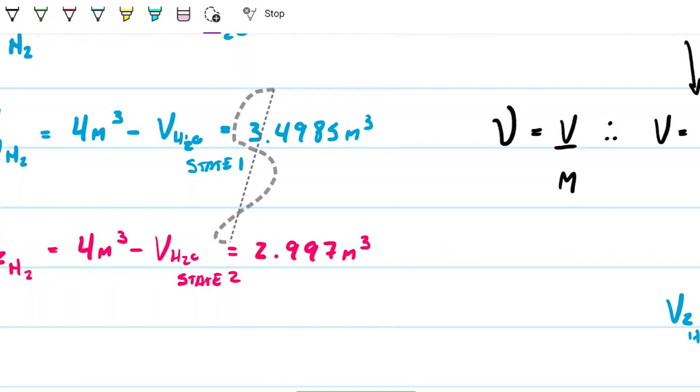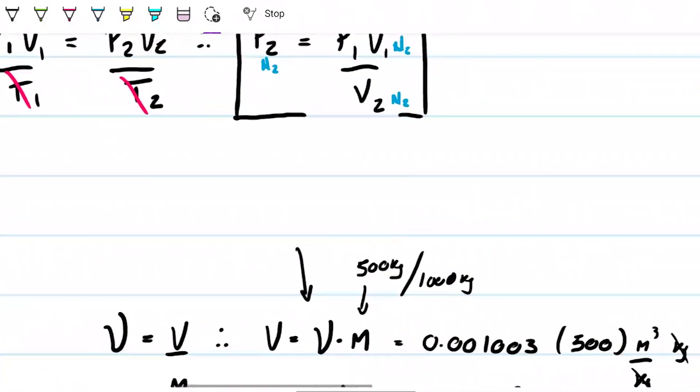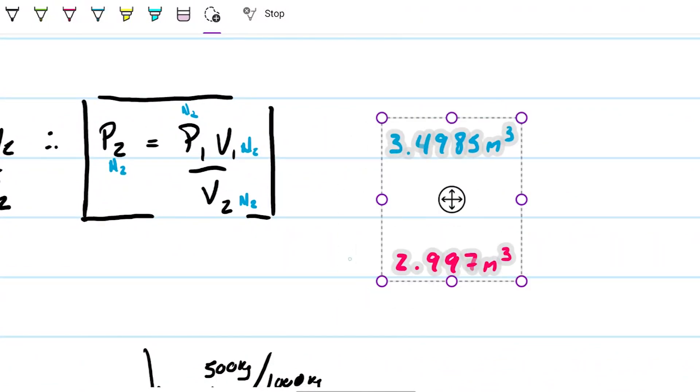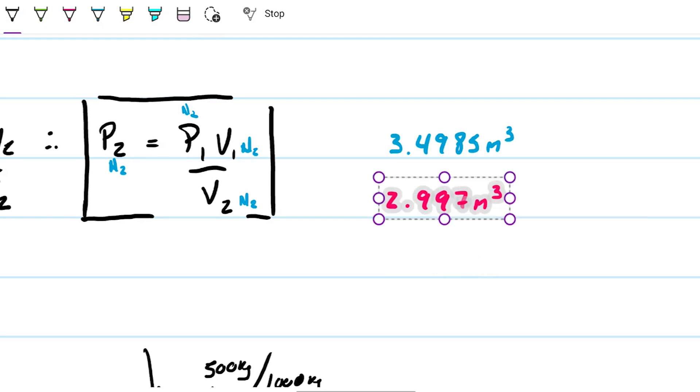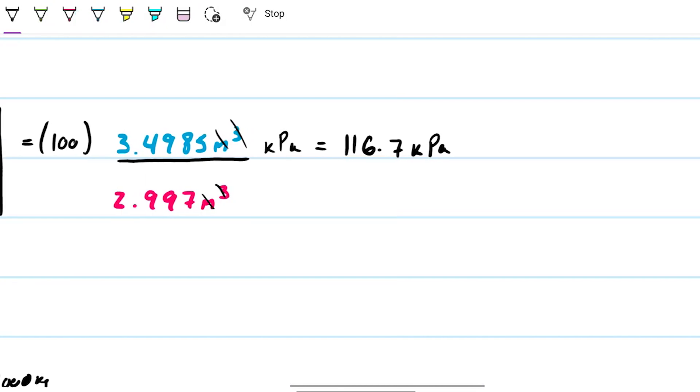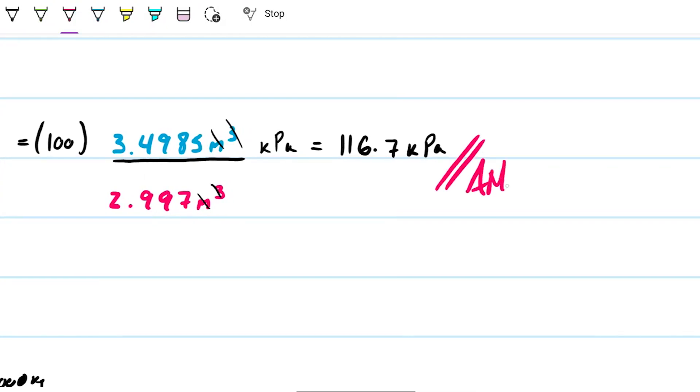These are the two values that I'm interested in so that I can find out what's the pressure difference right here. So this will be equal to pressure 1, which I've always known, 100 kilopascals, times the ratio between the volumes. My answer here will be in kilopascals. When I do that, I get that the pressure is 116.7 kilopascals. That's pressure 2 for the nitrogen.